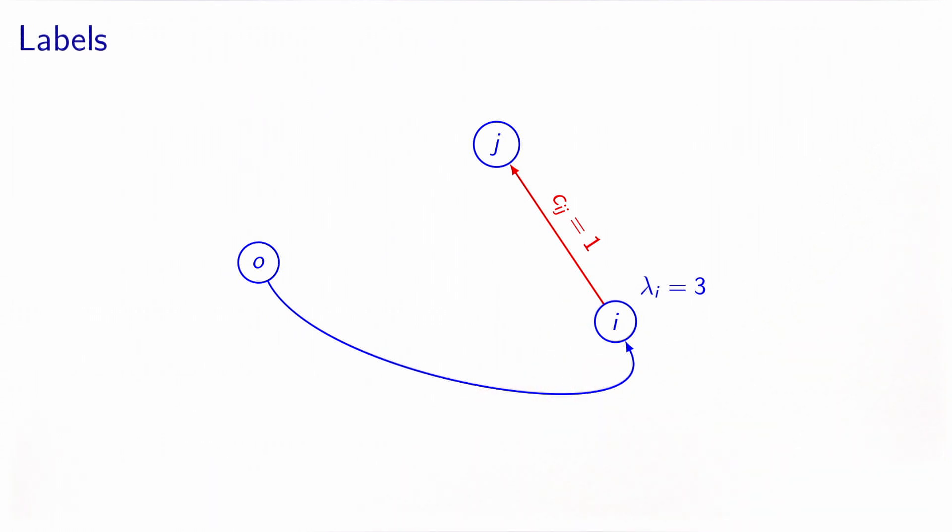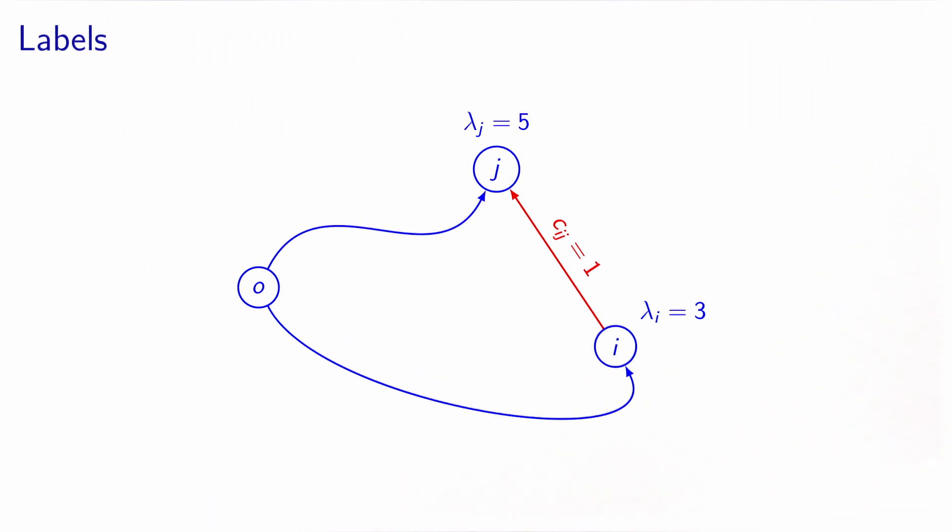Now, we reach node j and we look at what happens at node j. In node j, we have a label, which in this example is equal to 5. So, again, it means that previously the algorithm has found a path from o to j of length 5.